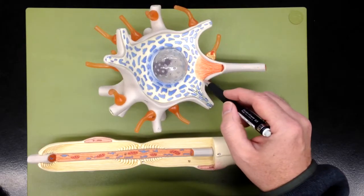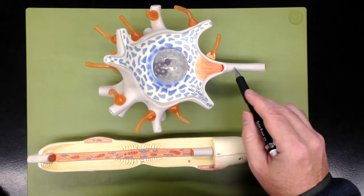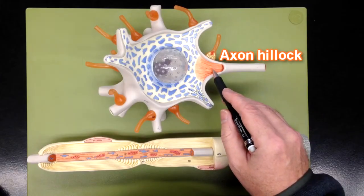This structure right here, this funnel-shaped structure which funnels things into the axon, this is the axon hillock.